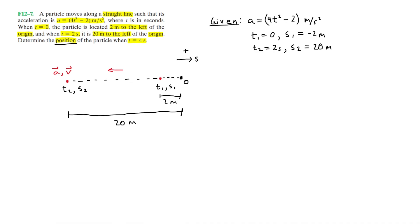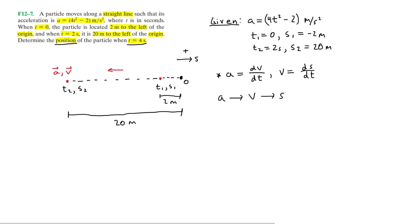We want to determine position at t = 4 seconds. We're given acceleration and need to find position. We know that acceleration is the derivative of velocity with respect to time, and velocity is the derivative of position with respect to time. To go from acceleration to velocity to position, we need to integrate twice — first to get velocity from acceleration, then integrate velocity to get position, since integration is taking the antiderivative.